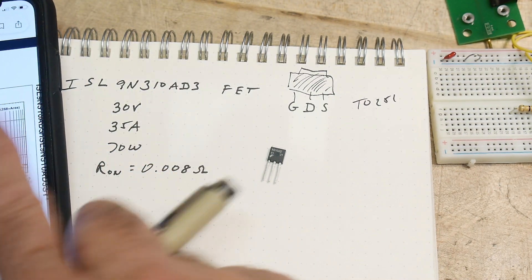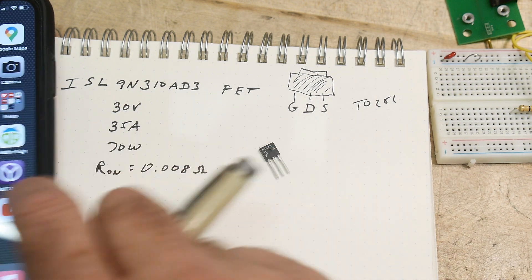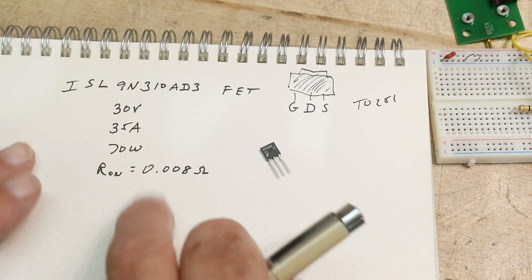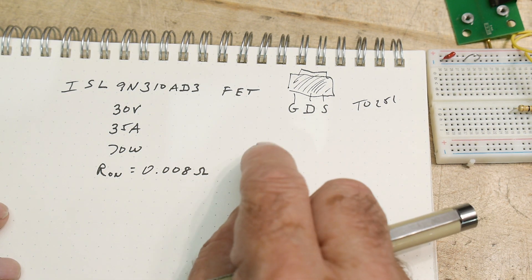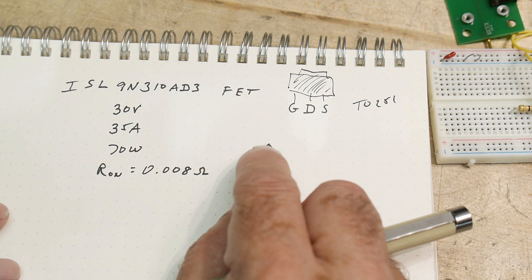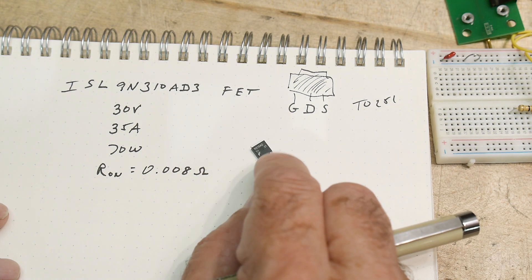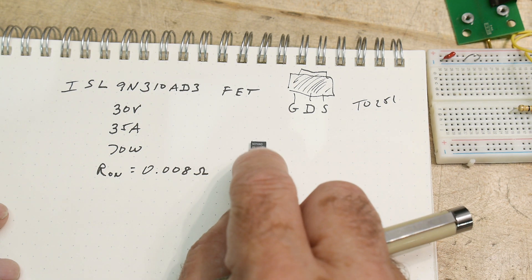So yeah, there's not much heat sink on this little guy, although he doesn't need a lot of heat sink because he's 0.008 ohms, which means there's not going to be much voltage drop on this guy, which means there's not going to be a lot of wattage, right?